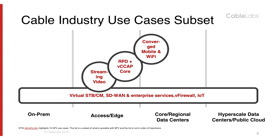Next is remote Wi-Fi device and virtual CCAP core — we'll look at that in more detail in subsequent slides. Streaming video is a huge area for cable operators to capitalize on. Then we have applications like virtual set-top box or cable modem — all the services we talked about for home and enterprise can be provided in a virtual set-top box or virtual cable modem environment, spanning on-prem to access edge. SD-WAN and enterprise services is a brand new source of growing revenue for cable operators. And security functions such as virtual firewall and IoT.